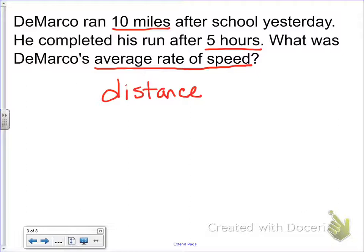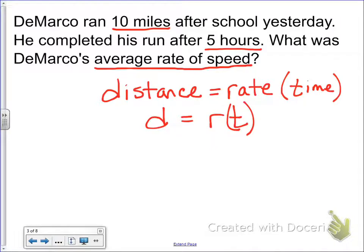So distance equals the rate of which someone ran, or the rate of how fast something is going, times time. How long did it take for someone to do it? So distance equals rate times time. And another way we say that is just d = rt, or as I say, dirt, because the equal sign starts with E, so I call it dirt.